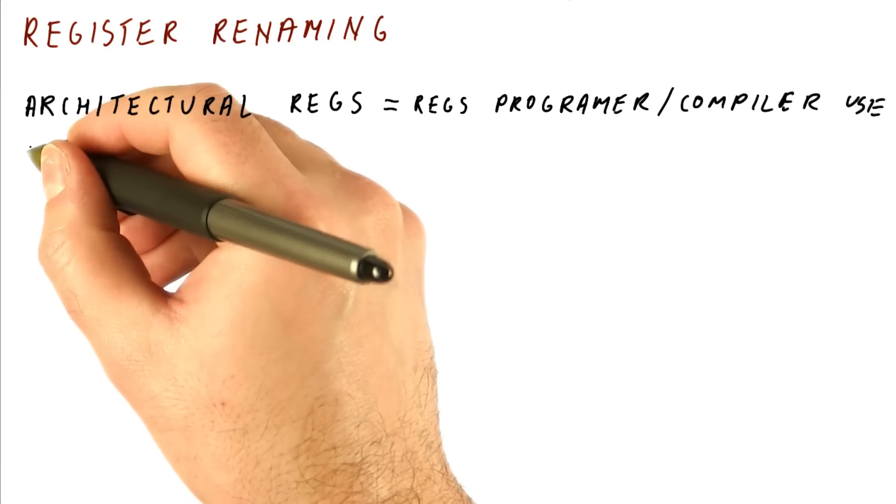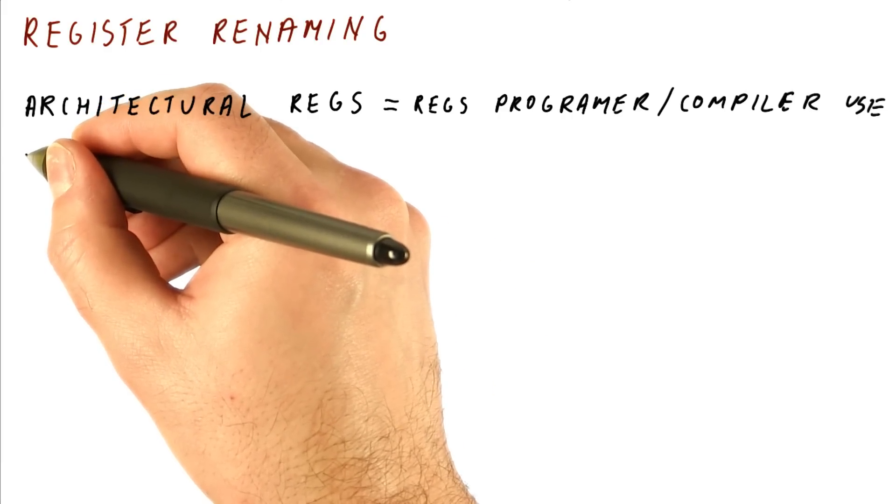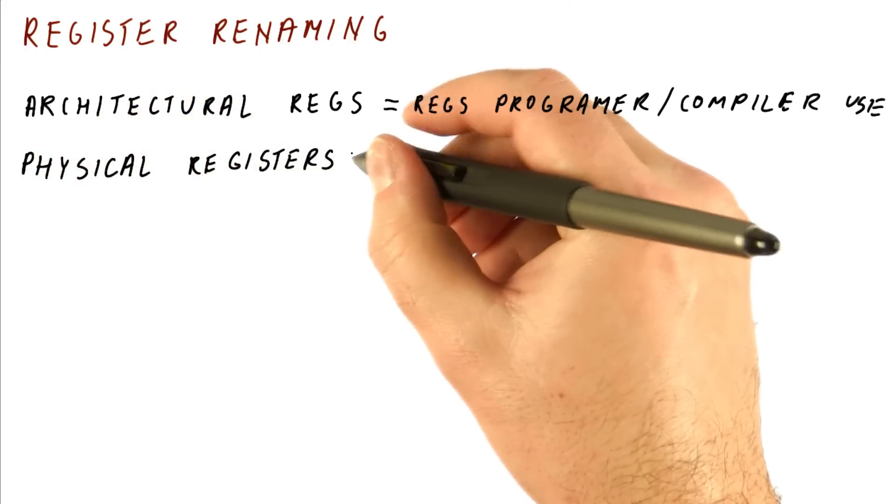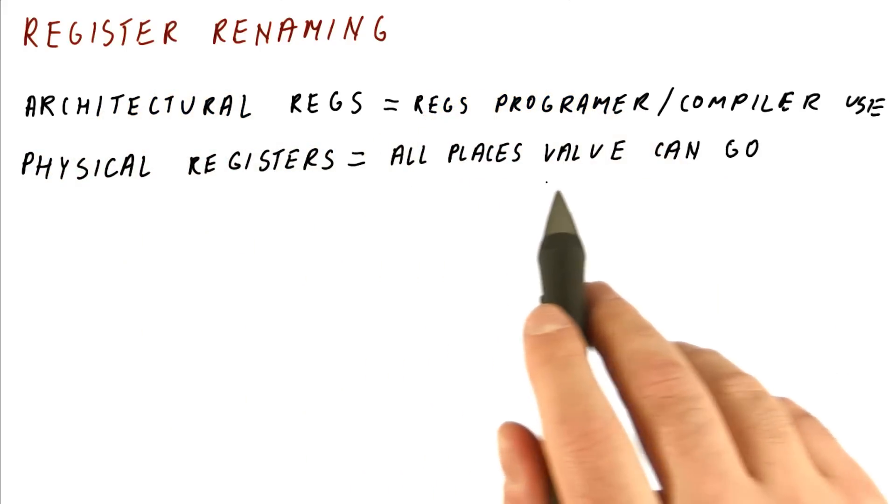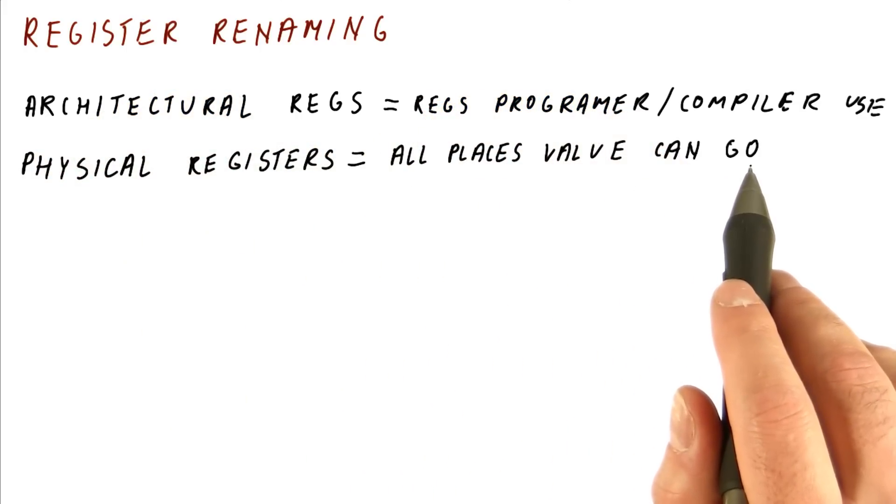In register renaming, there is also a concept of physical registers, which is all the places that we can actually put a value in the processor. So there is of course a place for the latest value of r1, for example, but there could be additional places where we could potentially store values that should be going to r1.